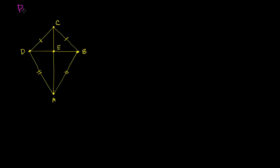What I want to do in this video is prove that segment AC is perpendicular to segment DB, based on the information in this diagram — that this side has the same length as that side, and this side has the same length as that side. I'll give you a hint: we're going to use one or more of our congruence postulates.